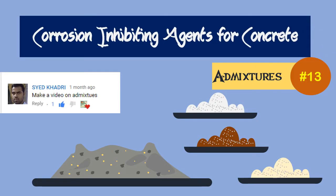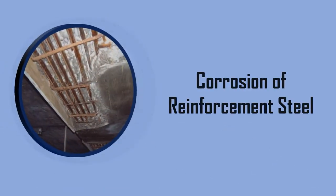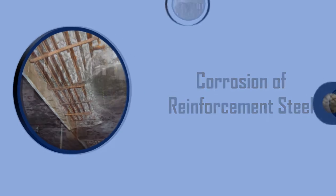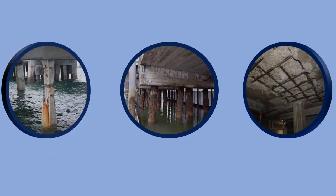Corrosion inhibiting agents for concrete. Corrosion of reinforcement steel is one of the common problems in building construction. Corrosion of reinforcement steel is severe in areas where concrete is exposed to saline water, brackish water, or industrial corrosive fumes.